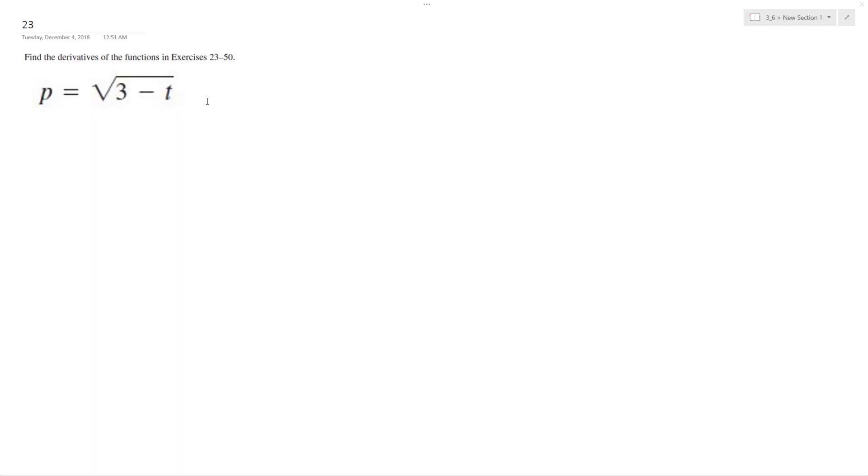Okay, let's set this up and find the derivative of this. So I'm going to use u substitution here. I'll set u equal to 3 minus t, and du is equal to negative 1, because the derivative of negative t is negative 1.